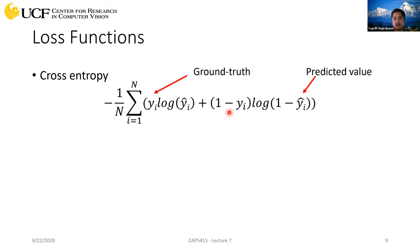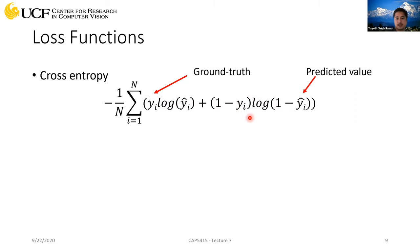The second term in cross entropy handles negative classes — cases when the object is not present. For example, if we're looking at the category 'horse' and horse is not present in the image of a car, the ground truth bit for horse is zero, making one minus zero equal to one. So for negative classes the ground truth is always zero and this term simplifies accordingly. The same logic applies: if the network predicts zero the loss is zero, but if the network predicts one it becomes infinite because of the negative term. That's how cross entropy works.